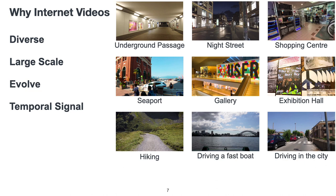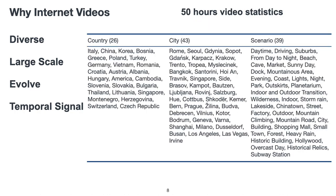We use internet videos for several reasons. First, they are easy to obtain, naturally diverse, large-scale, and evolve over time. Using YouTube tourism videos, we can easily collect large-scale data from various countries, scene types, and weather conditions.